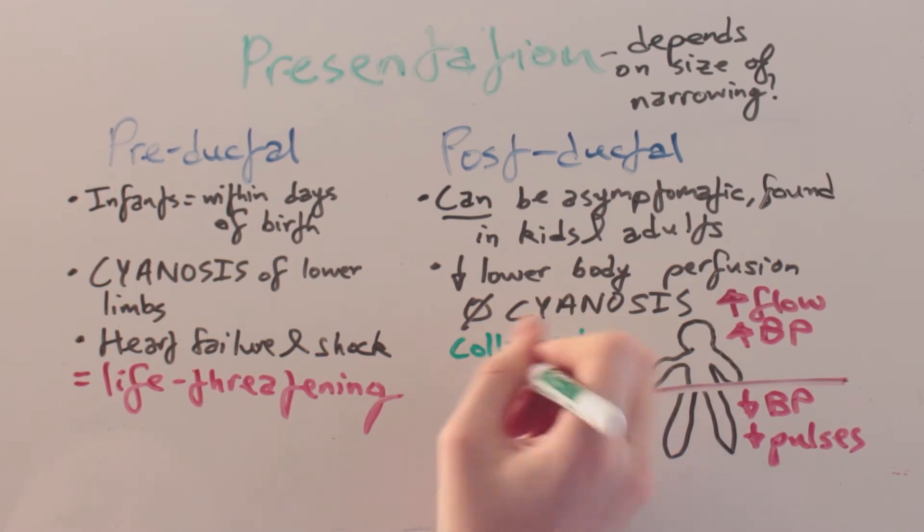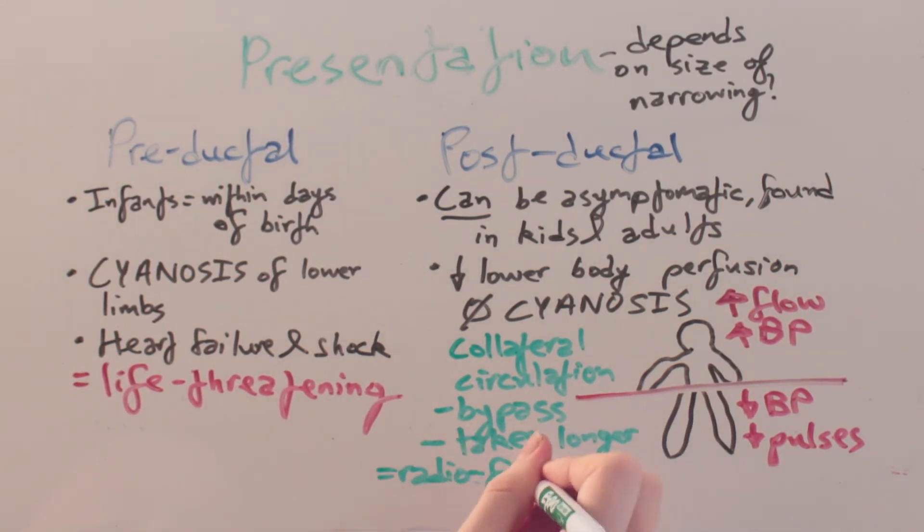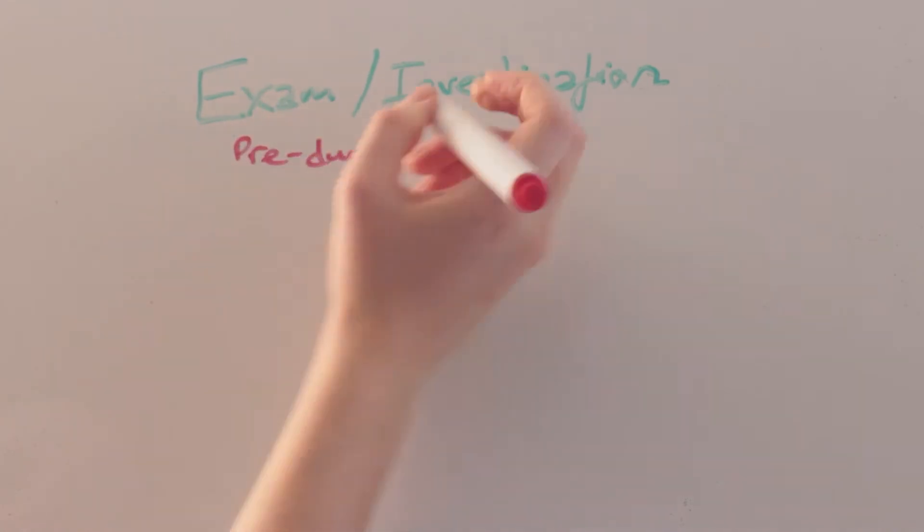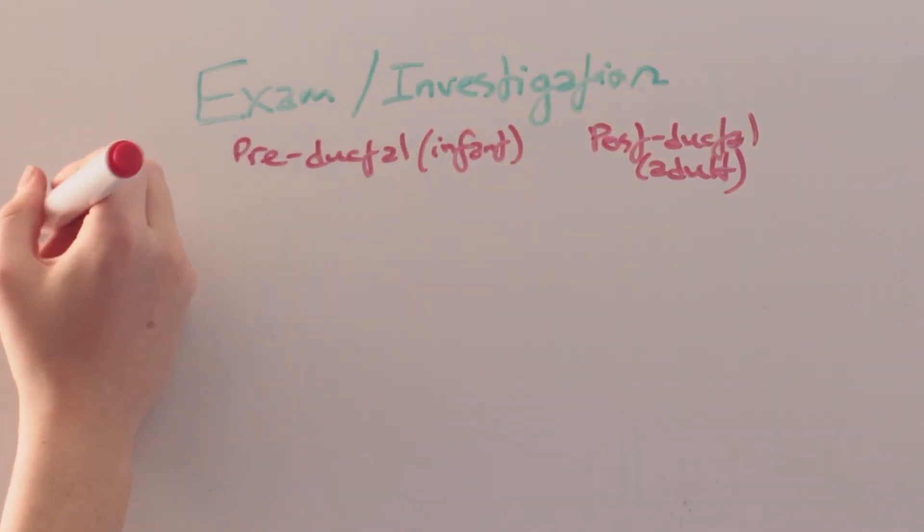Collateral circulation also develops to bypass the obstructed arch, and thus blood takes longer to reach the extremities, so a radiofemoral delay is common. For further examination and investigation, let's compare infants with adults.